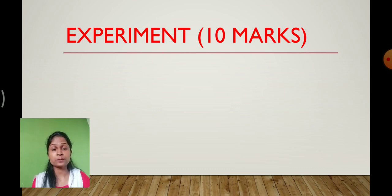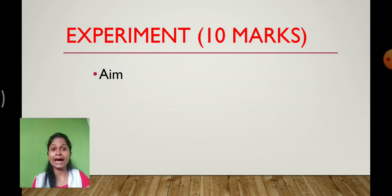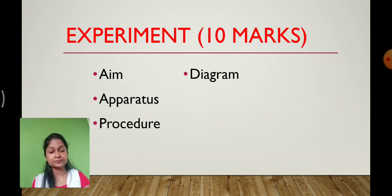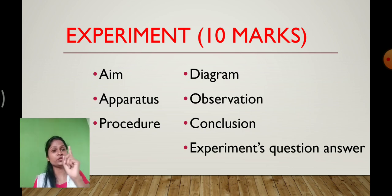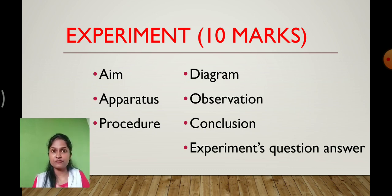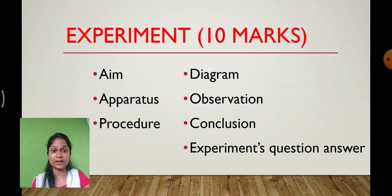There are total 10 marks for your experiment. You will get full marks only when you include the following: aim, apparatus, procedure, diagram with labels in pencil, observation, conclusion, and all six questions with answers. Write your name and SID number on the paper before submission. I hope you have understood what electrostatic force means.